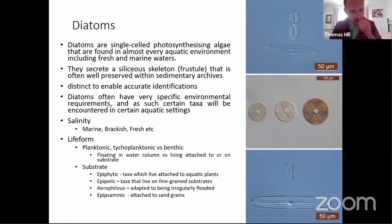So very briefly, these are single-celled photosynthesizing algae that are found in almost every aquatic environment, whether you're looking at freshwater lakes or open marine settings. They secrete what's called a frustule, a siliceous skeleton, and it's often very well preserved in sedimentary archives, particularly minerogenic archives. So these are things like muddy, sandy deposits, not as well preserved in peatlands, as we'll find out about. They thrive in peatlands, but their preservation is limited over time as that peat gets buried.